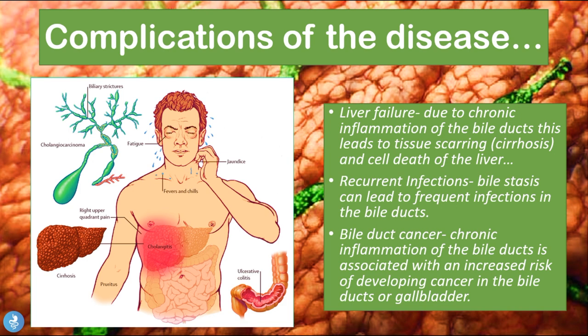These patients may also experience recurrent infections — due to bile stasis within the various channels, patients can develop infections within the bile ducts. Another complication is bile duct cancer; chronic inflammation of the bile ducts is associated with an increased risk of developing cancer in the bile ducts or gallbladder. We can see a cholangiocarcinoma developing in this image on my left, caused by the chronic inflammation where cells become chronically irritated and eventually develop into cancer within the biliary system.